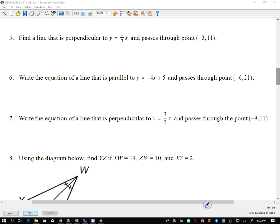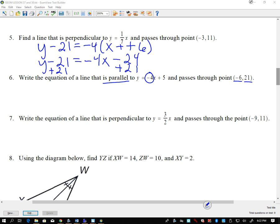Number 6. Write the equation of the line that is parallel to y equals negative 4x plus 5 and goes through negative 6, 21. Y minus y, which is 21, equals, and because it's parallel, we can use this same slope. We don't want to change it. So negative 4, x minus negative 6. Y minus 21 equals, distribute the negative 4, negative 4x minus 24. Plus 21 to both sides. Y equals negative 4x minus 3.